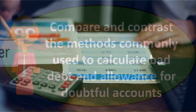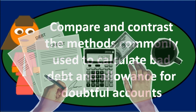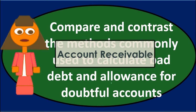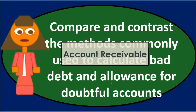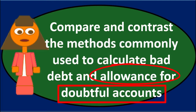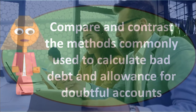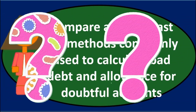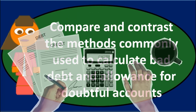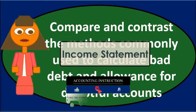We create a contra asset account — the allowance for doubtful accounts — which carries a credit balance rather than a normal debit balance. This represents the amount we believe is uncollectible. So accounts receivable shows what people owe us, minus the allowance for doubtful accounts (what we believe is uncollectible), giving us net receivables. The journal entry credits the allowance for doubtful accounts and debits bad debt expense.